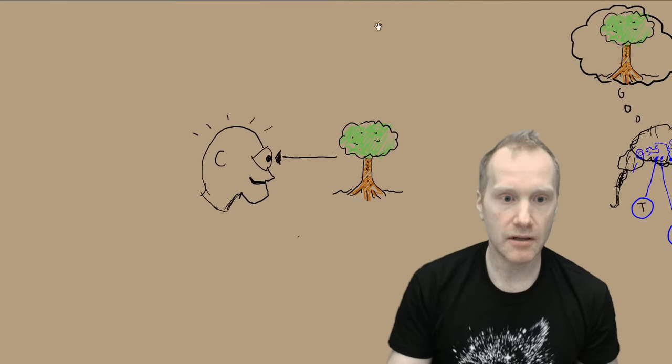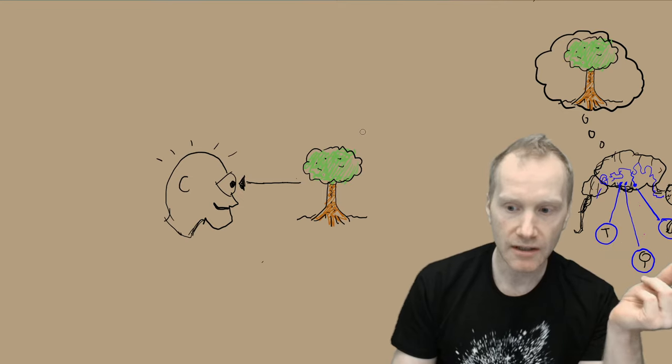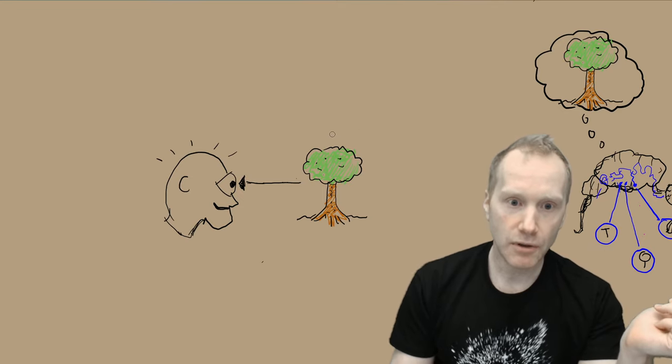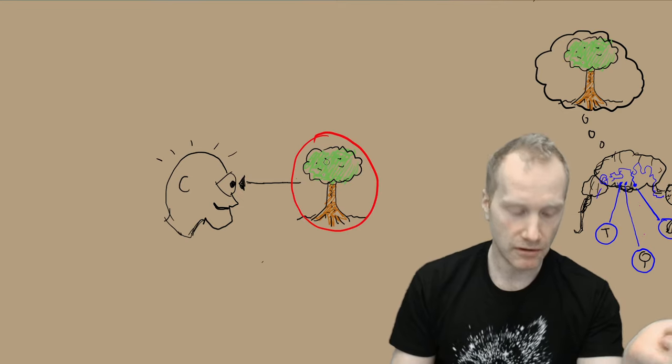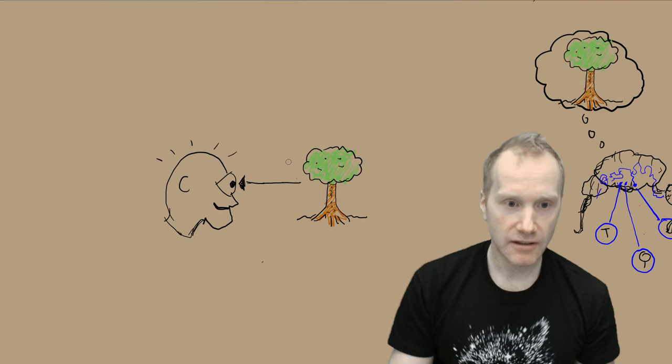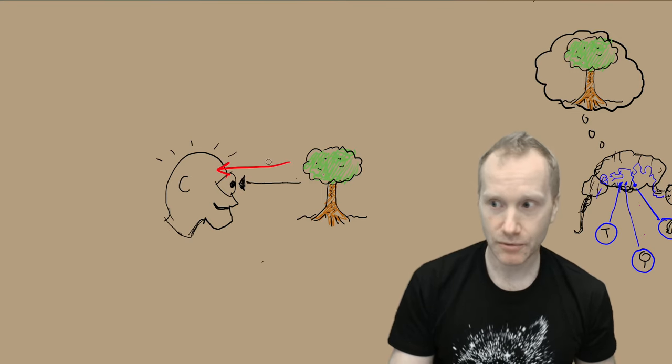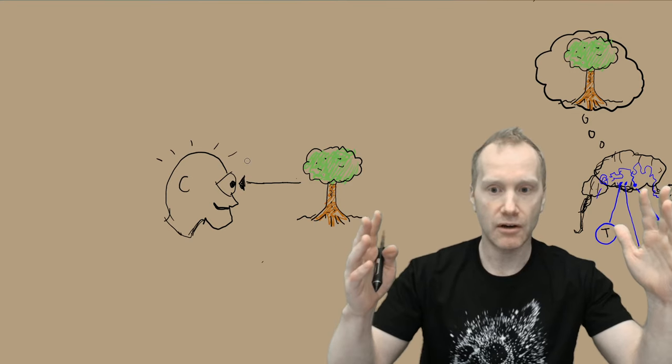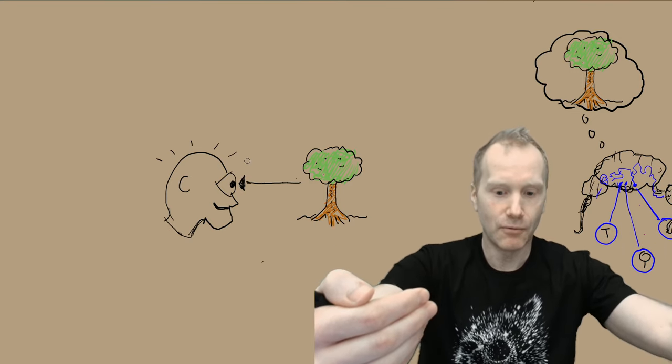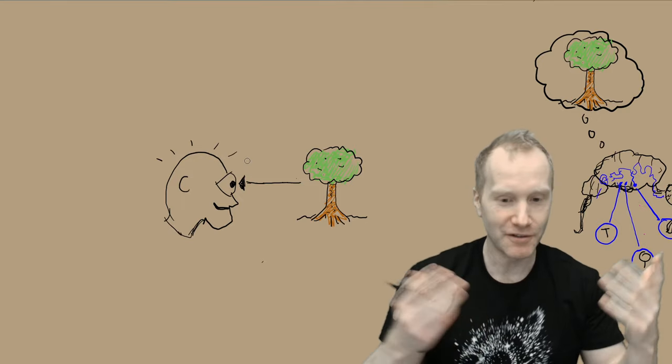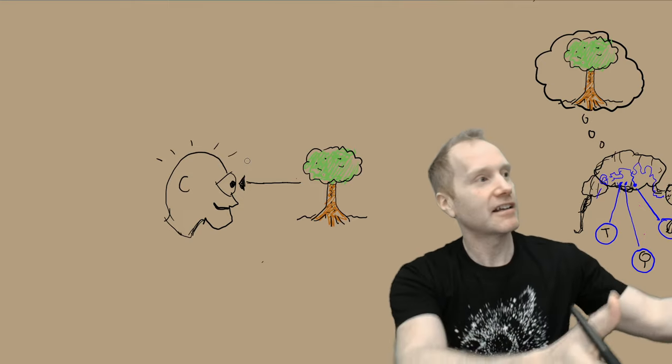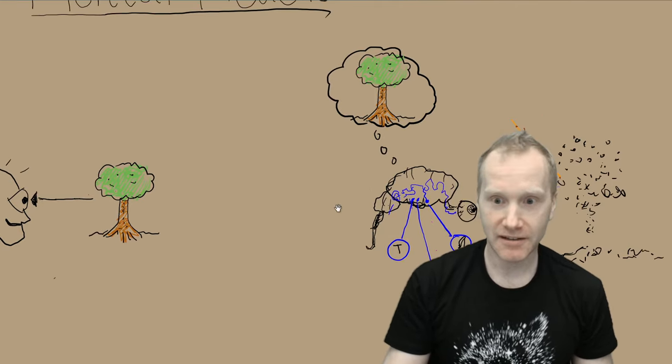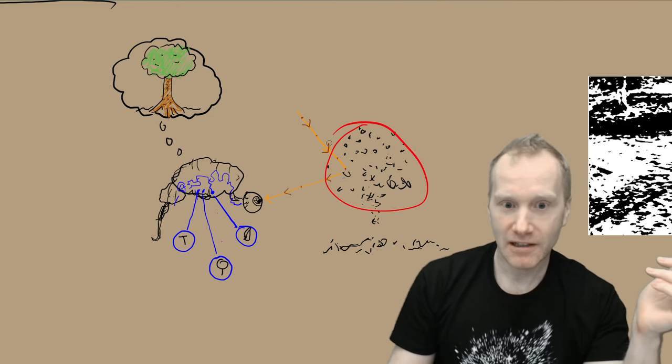The first thing to understand is that perception doesn't work as we intuitively think about it. We think that there is a world outside of us, and that world gets somehow transported into our heads by some process. You look around yourself right now, and you're really thinking that that world, the screen or whatever, just gets transported into your head. That is not how reality works.